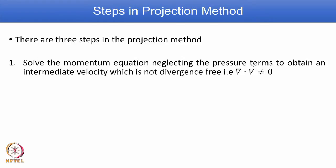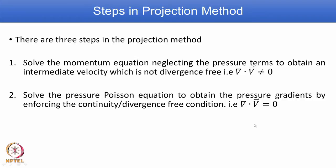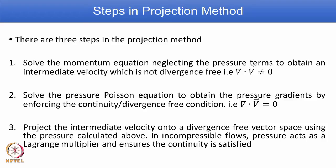First, solve the momentum equation without considering the pressure term. We obtain what is known as an intermediate velocity denoted as u-star and v-star. Because we have not considered the pressure term, it will not satisfy the continuity equation — in other words, del dot v is not equal to 0. Then you solve the pressure Poisson equation to obtain the pressure gradient, enforcing the continuity or divergence-free condition, that is del dot v equal to 0. Then project the intermediate velocity onto the divergence-free vector space using the pressure calculated in the previous step. In incompressible flows, the pressure acts as a Lagrange multiplier and ensures continuity is satisfied.